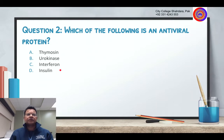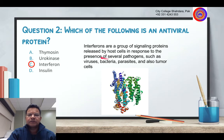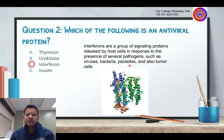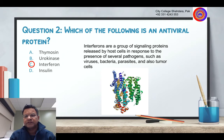Antiviral protein — that's right, interferon. Interferons are a group of signaling proteins released by host cells in response to the presence of several pathogens such as viruses, bacteria, parasites, and also tumor cells. So when there is a virus, bacteria, parasites, infections, and inflammation, there are many signaling molecules released. Interferon is one of them.